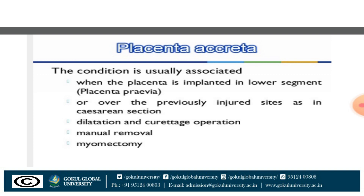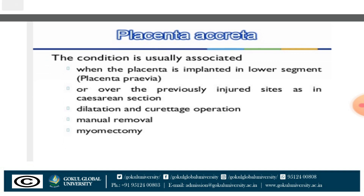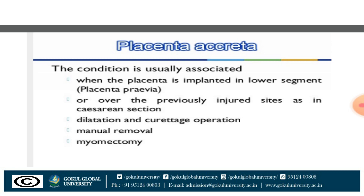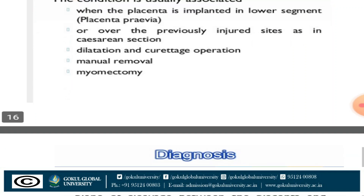In placenta percreta, the whole placenta attaches itself to the uterine layers and grows through the uterus, potentially reaching nearby organs. Normally, the bladder is a nearby organ of the uterus. If placenta percreta is present, the placenta can involve that nearby organ of the uterus.